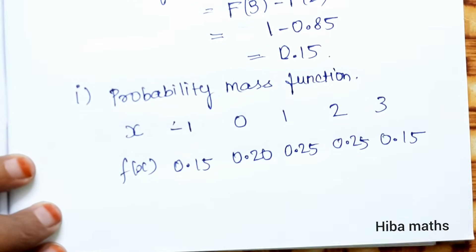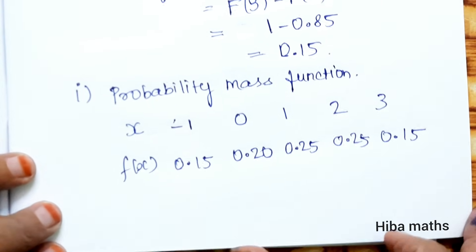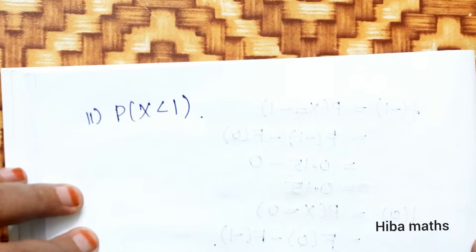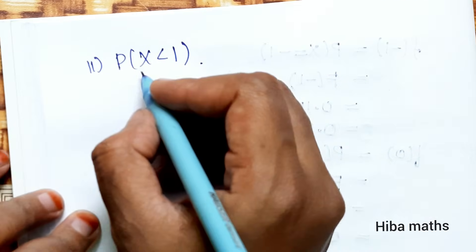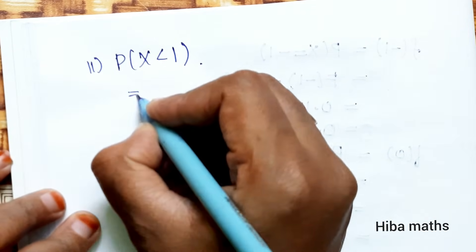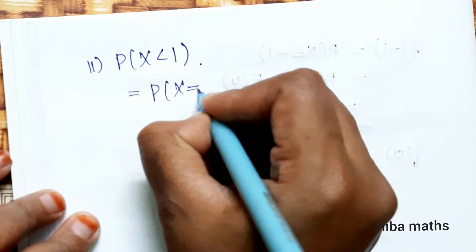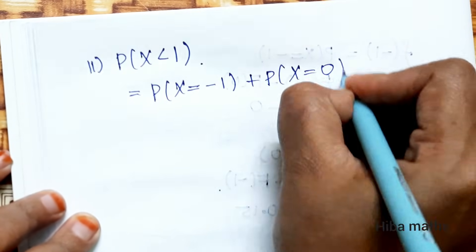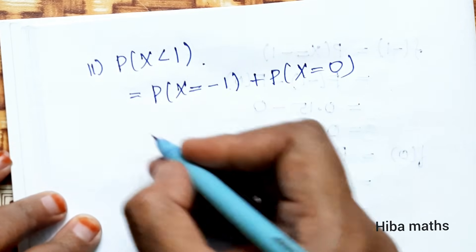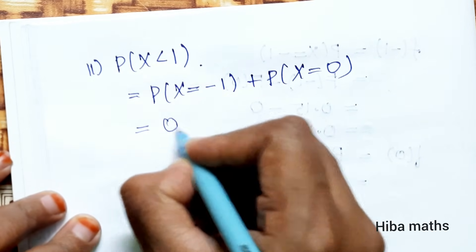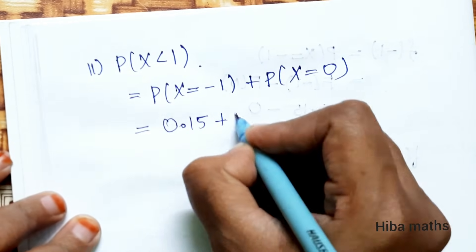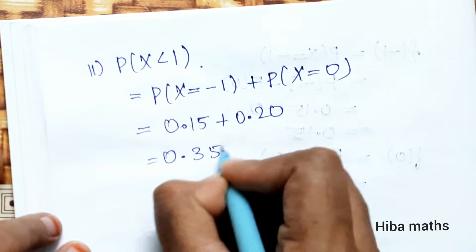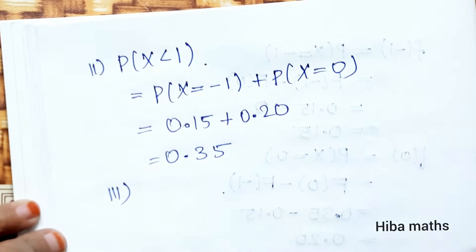For the second sub-part, P(x less than 1) equals P(x equals minus 1) plus P(x equals 0), which equals 0.15 plus 0.20, that is equal to 0.35.